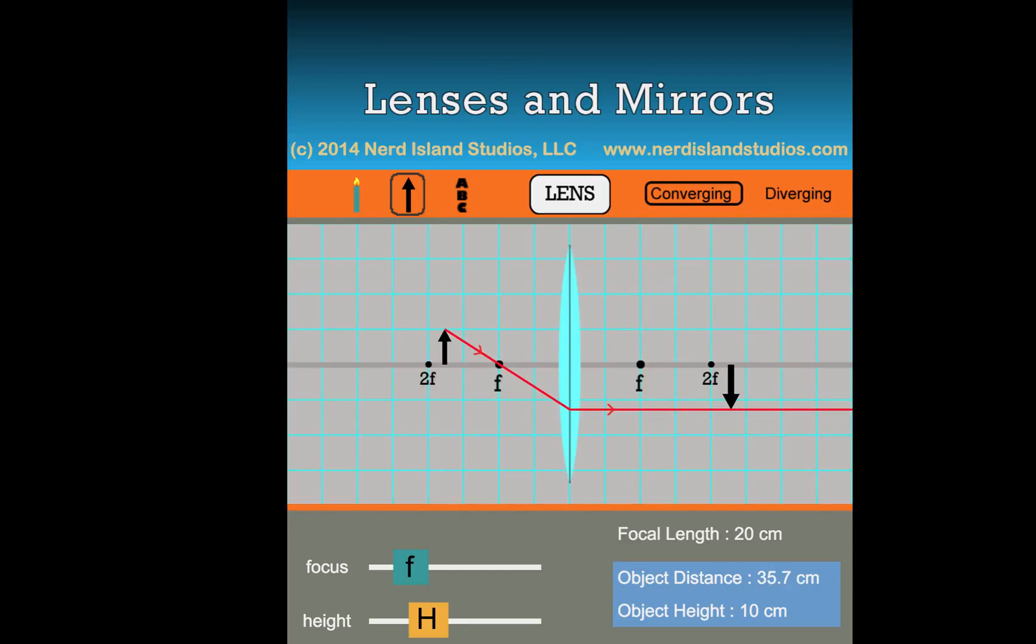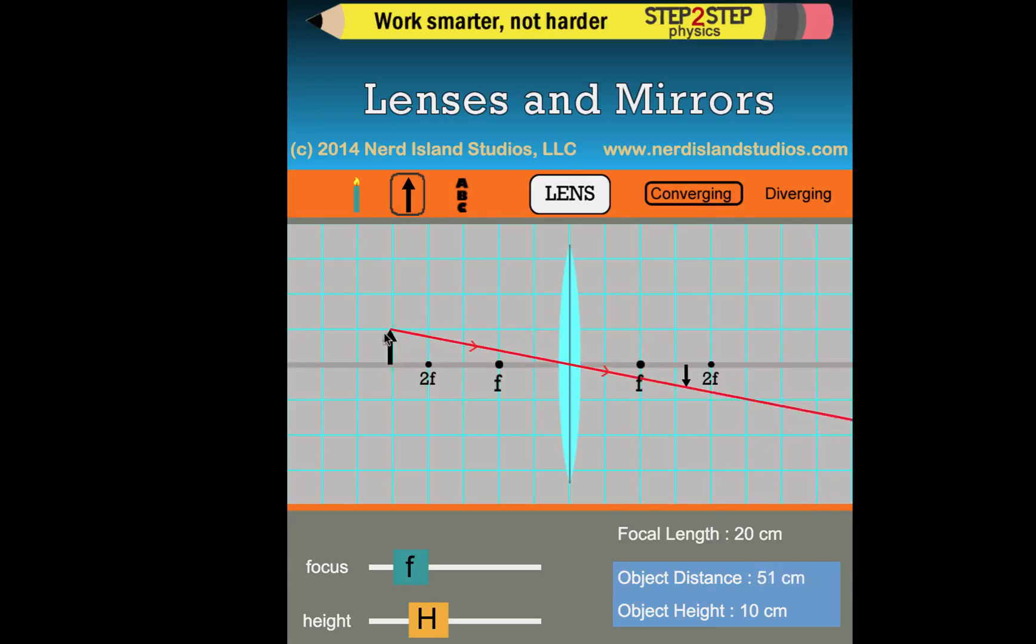Okay, and ray number 3, which we might use from time to time. We look at what it's doing. Ray number 3 goes from the tip of the object directly through the optical center of the lens and comes straight through. So if I move this object back and forth, you'll notice that it always goes straight through the center of the lens and out the other side.